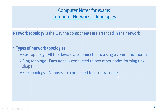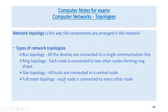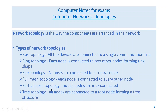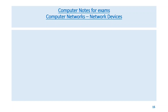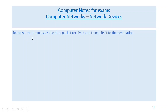Star topology — all nodes are connected to a central node. Full mesh topology — each node is connected to every other node. Partial mesh topology — not all nodes are interconnected. Tree topology — all nodes are connected to a root node forming a tree structure.